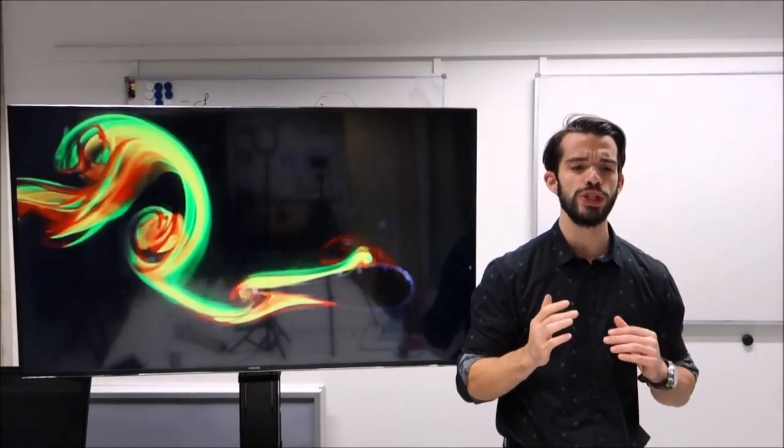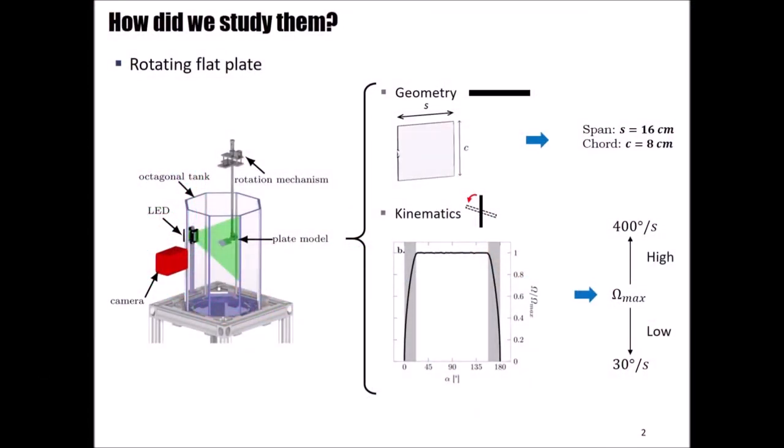For this reason, we decided to pick a configuration which is not as widely explored as the others, the rotating plate. The plate is placed into a tank filled with quiescent water and fastened to a rotation mechanism that allows the plate to rotate 180 degrees around its mid-chord. The geometry we selected for the plate is a 16 cm span and an 8 cm chord. The kinematics we decided to assign to the plate is a trapezoidal motion, in which the maximum achieved speed is varied in a range of 13 degrees per second to 400 degrees per second.